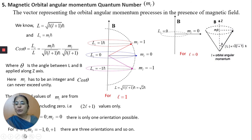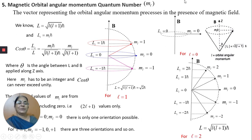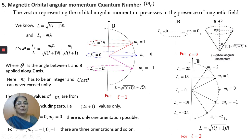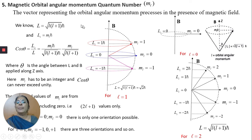For L=2, ML can take values +2, +1, 0, −1, −2 — that gives 5 orientations. The orbital angular momentum can precess about the magnetic field only in these 5 orientations. This is what is called the magnetic orbital angular momentum quantum number ML.